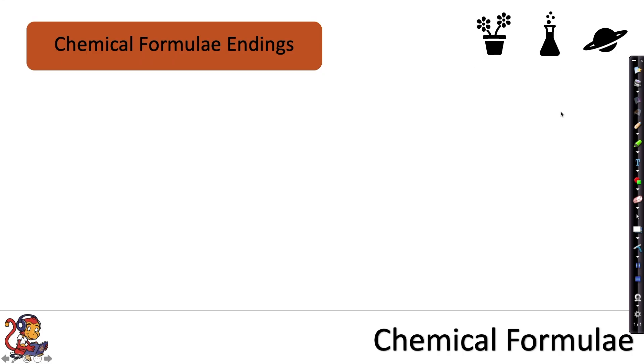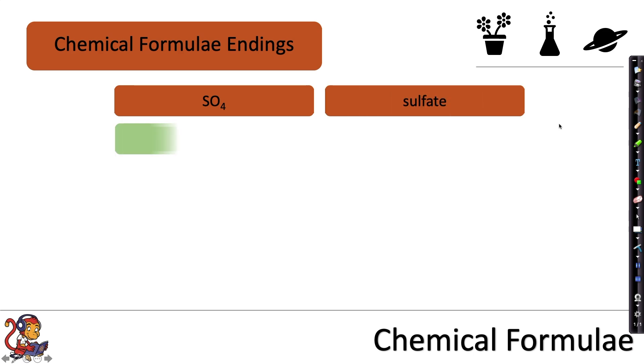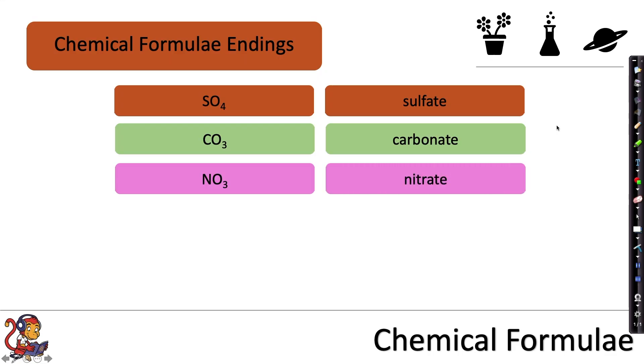So I'm going to go through now some common endings for chemical formulae, which will help you to name them. So if you ever see SO4, that means sulfate. If you see CO3 in a chemical formulae, that means carbonate. NO3 means nitrate.